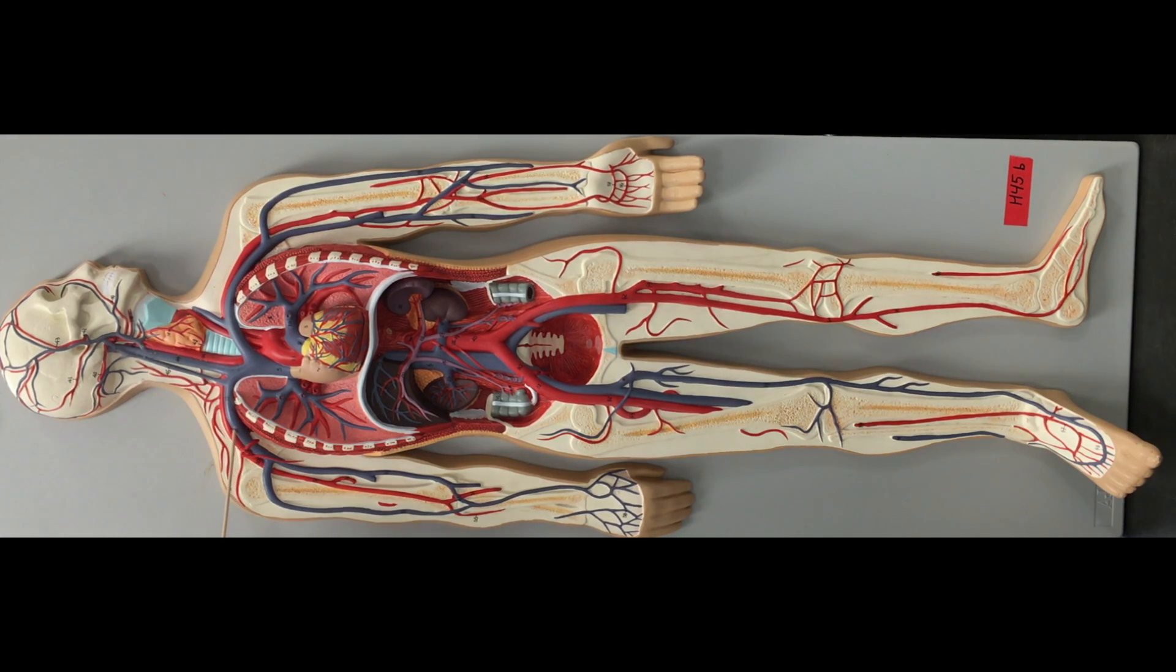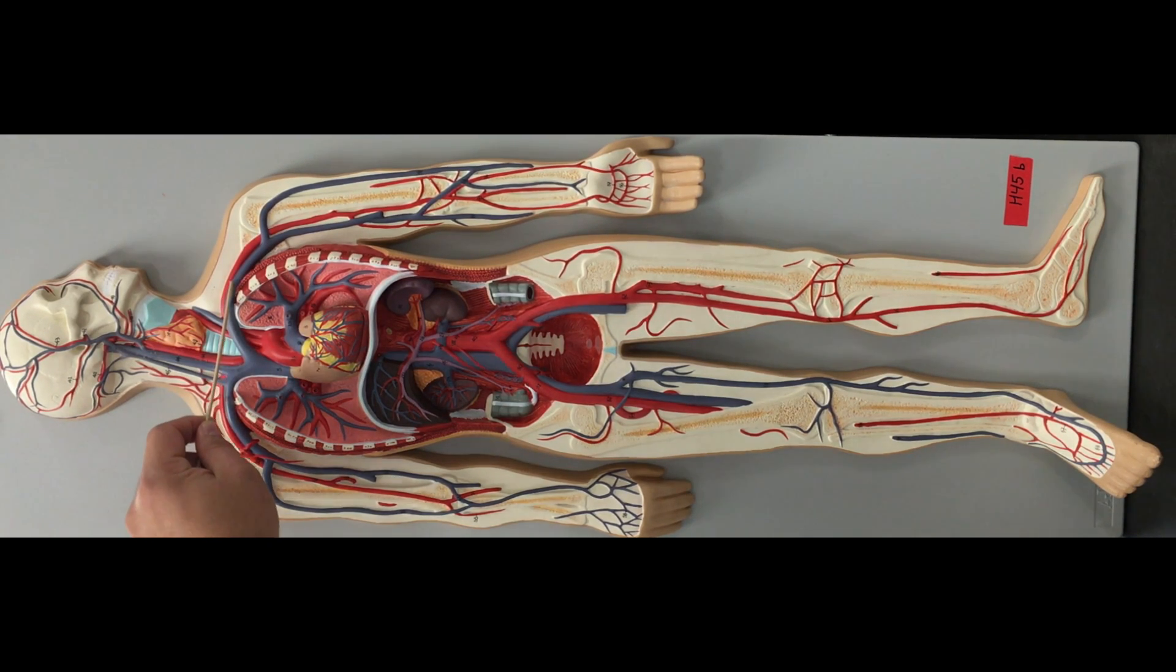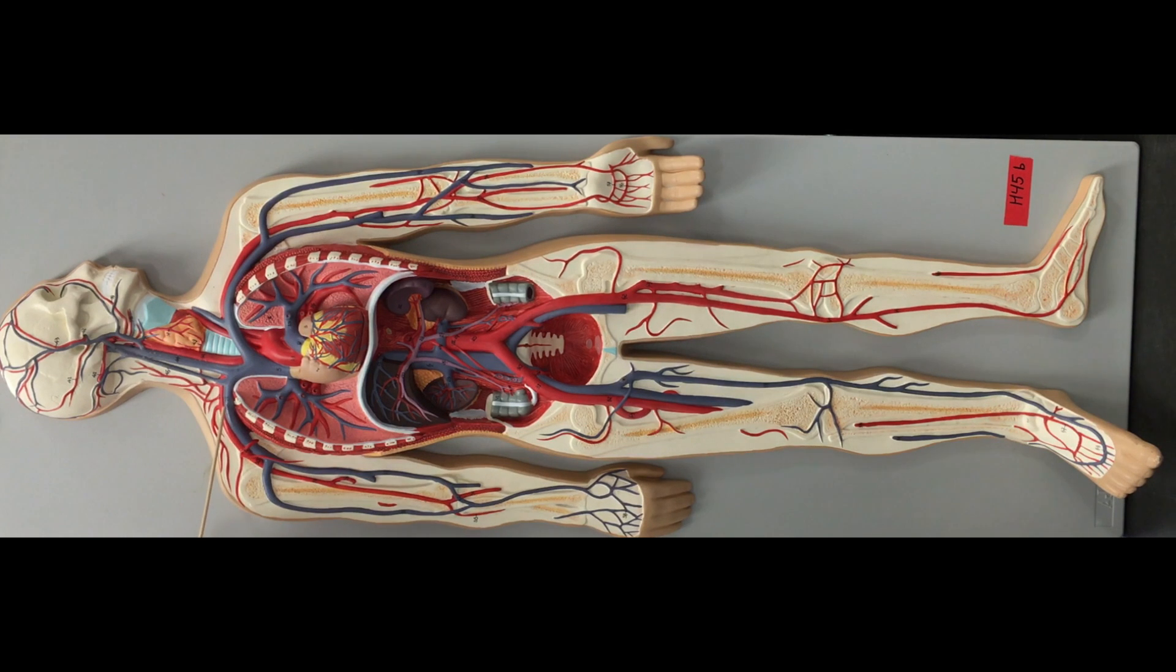We have our right subclavian, and if you were to go on the left side you have your left subclavian. We're going to stay on the right. The right subclavian branches to the outermost aspect which is the right cephalic vein.